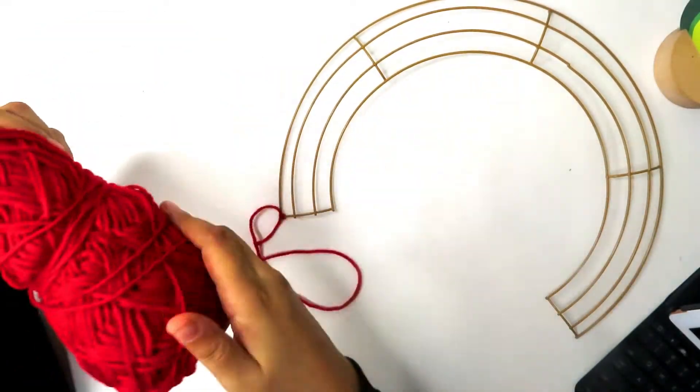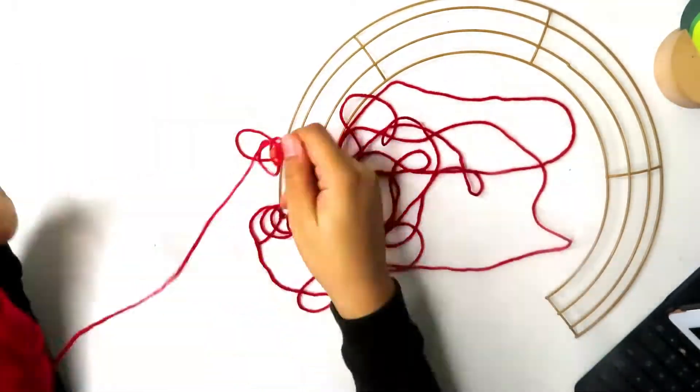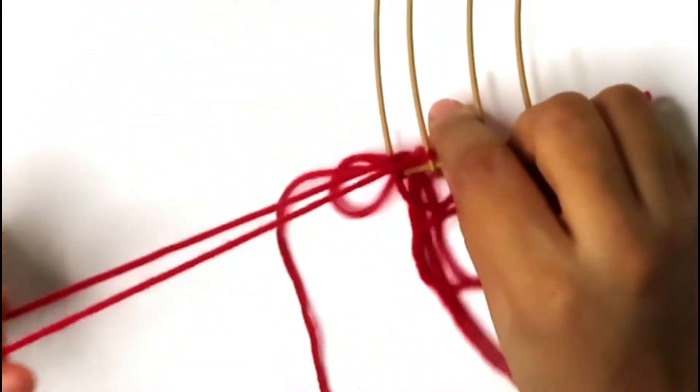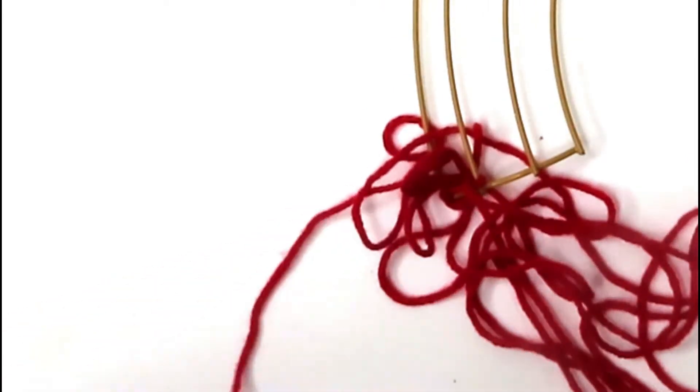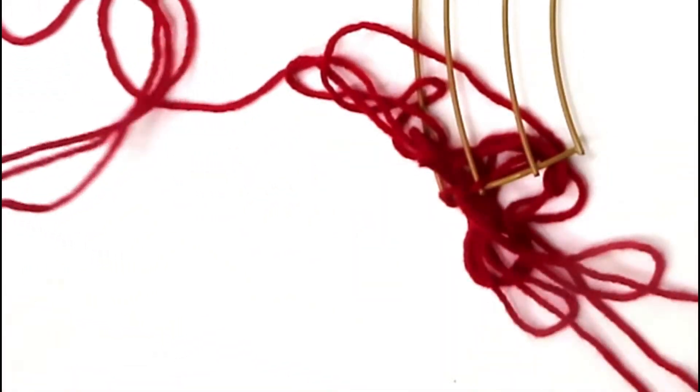Unwrap about 10 feet of yarn and cut it with your scissors. Grab the end of your yarn and wrap it around the first and the second arches of the rainbow in a figure eight motion going under and around, then under and around, and make sure to pull your yarn all the way through.